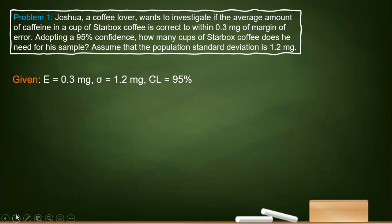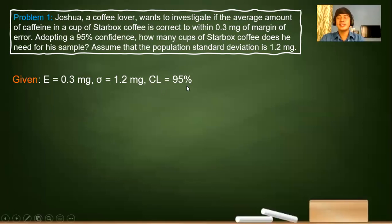First, we write the given. Our margin of error is 0.3 milligrams. The term that you always look for is the word within for you to be able to get the margin of error. Our population standard deviation is 1.2 milligrams and our confidence level is 95%. We need to find how many cups of sample does he need.